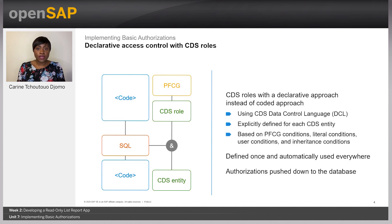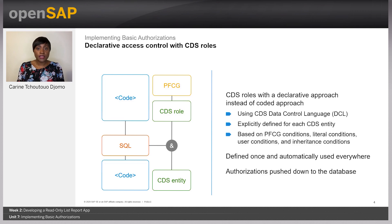CDS rules can be defined using PFCG conditions, literal conditions, user conditions, and inheritance conditions. They have to be explicitly defined for each CDS entity where required. They are part of the data model and therefore are also pushed down to the database so that only the authorized data is returned when reading a CDS data model. CDS rules are defined once and automatically used everywhere when accessing the CDS entity.